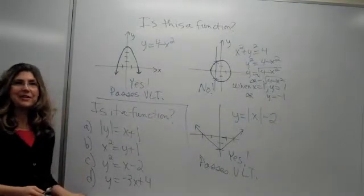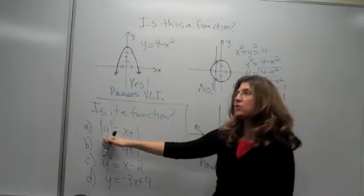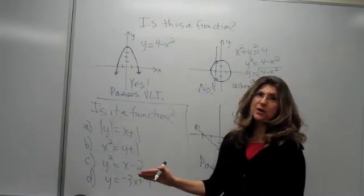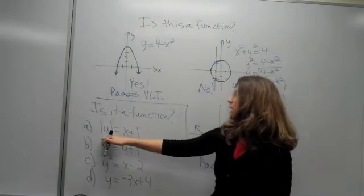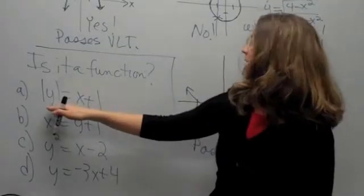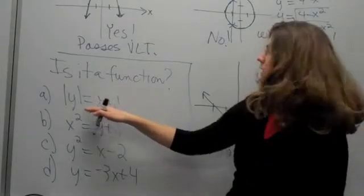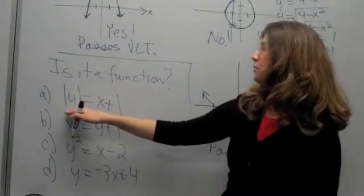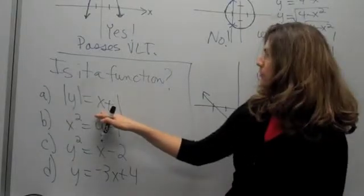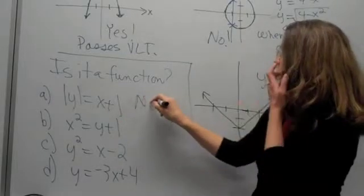Alright class, so let's consider these equations and see, are they functions? If the y value can be more than one thing, given a particular x, then it's not going to represent a function. So here, since absolute value of y is x plus 1, that would mean that if we put in, let's say, x equals 3, then either y equals 4 or y equals minus 4 would satisfy that. And thus, we'd have one x value of 3 going to more than one y value. So this would be a no.